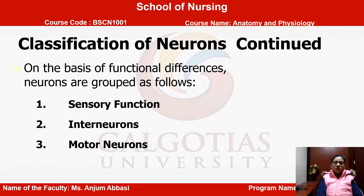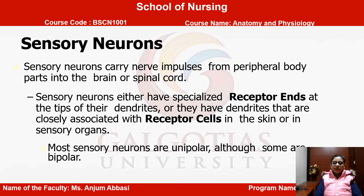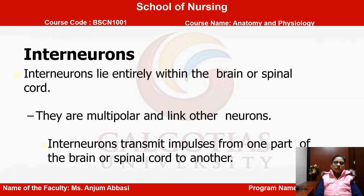Neurons are arranged into three categories based on function. The first is sensory neurons. Sensory neurons carry nerve impulses from peripheral body parts into the brain or spinal cord — whatever information comes from your peripheral body part to the brain is because of sensory neurons. Sensory neurons either have specialized receptor ends at the tip of their dendrites or have dendrites closely associated with receptor cells in the skin or sensory organs. Most sensory neurons are unipolar, although some are bipolar.